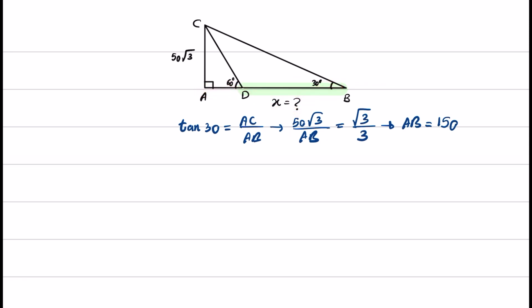Now we know the length of AB. If we want to calculate X, we just need to subtract AD from AB. So in order to find AD, I'm going to use the 60 degree angle that we see in the left triangle, and I will again use the same tangent formula.